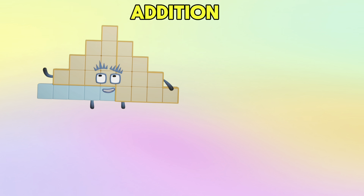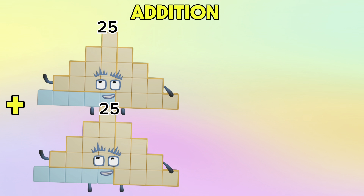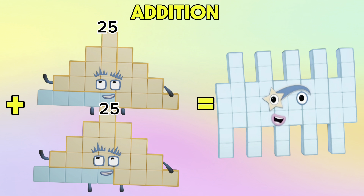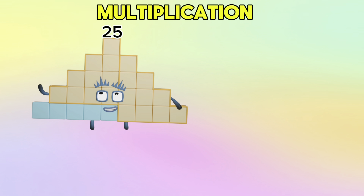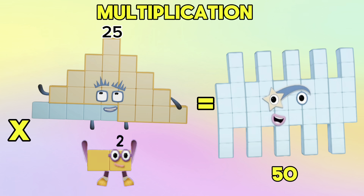Next, 25 plus 25 is equals to 50. In Multiplication, 25 multiplied by 2 is equals to 50.